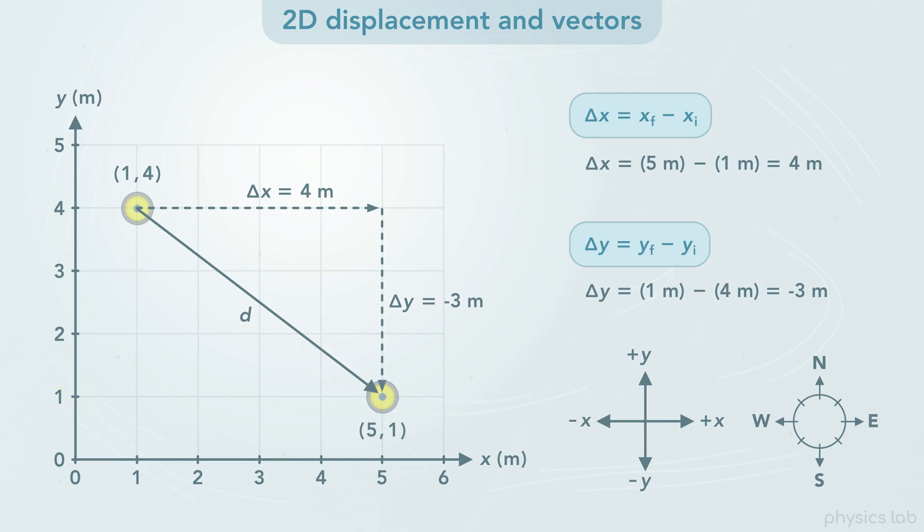The magnitude of the displacement vector is still positive 5 meters, because magnitude is always positive. If someone asks how far did the stone move, we would say 5 meters, not negative 5 meters.